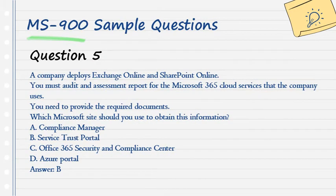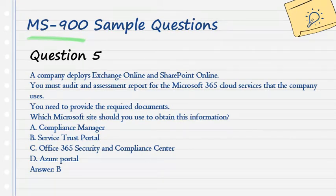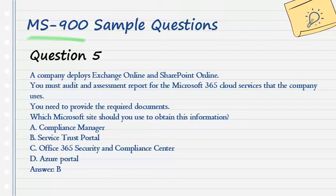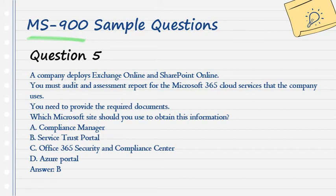Question 5. A company deploys Exchange Online and SharePoint Online. You must audit an assessment report for the Microsoft 365 cloud services that the company uses. You need to provide the required documents. Which Microsoft site should you use to obtain this information? A. Compliance Manager. B. Service Trust Portal. C. Office 365 Security and Compliance Center. D. Azure Portal. Answer: B.